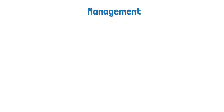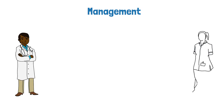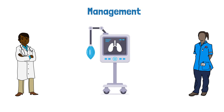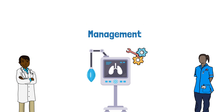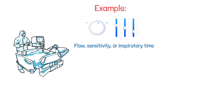The management of patient-ventilator asynchrony depends on the specific cause. Since inappropriate ventilator settings are typically involved, making proper adjustments appears to be the best treatment method. For example, the practitioner may need to adjust the flow sensitivity or inspiratory time, and a different ventilator mode may be considered as well.